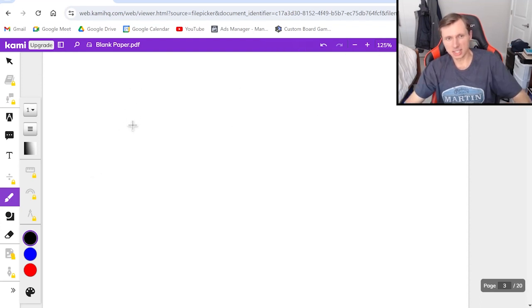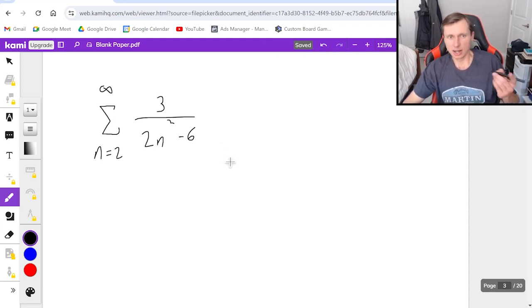Now I have one more for us. Let's say it's the series from n equals 2 to infinity of 3 over 2n squared minus 6. So if I want to solve this one, first I have to compare it to 1. Probably a good idea to compare it to 3 over 2n squared, or really just 1 over n squared will work. I can ignore the coefficients.